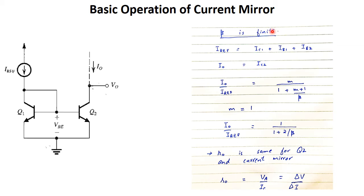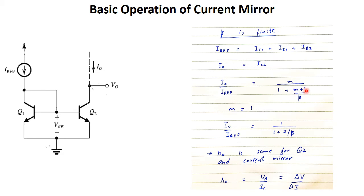Now if we consider β to be finite, this means IB1 current will flow from Q1 and IB2 current will flow from Q2. So I-reference will be equal to IC1 plus IB1 plus IB2. And output current I-out is equal to IC2. So the ratio of output current to reference current is given by M divided by 1 plus (M+1)/β, which we derived in the last lecture.